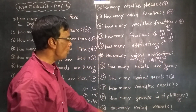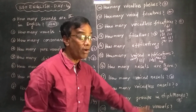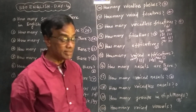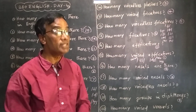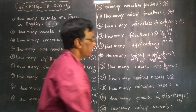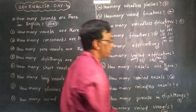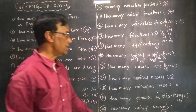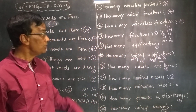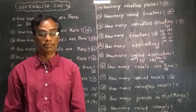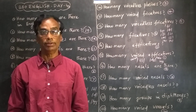How many voiced vowels? There are 20. All vowels are voiced, so there are 20. Why is it over 20? I will tell you. Thank you.